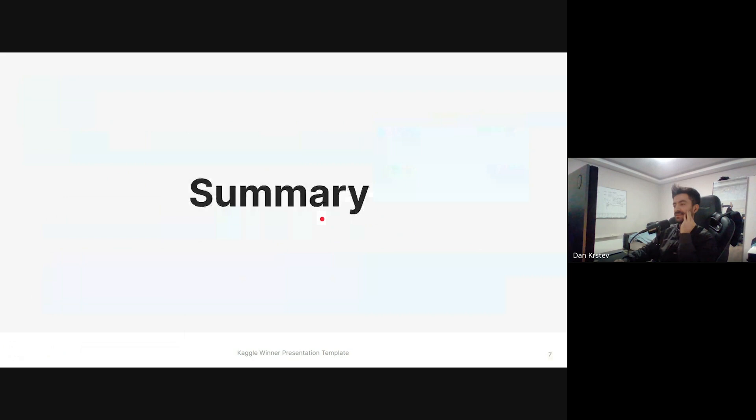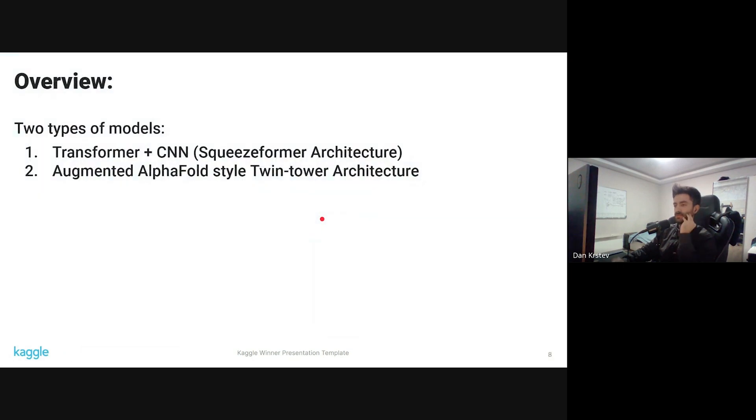This is just a quick summary. I used two types of models in this competition. I used the Squeezeformer architecture, which is just a transformer plus CNN, and I also used an augmented AlphaFold style twin tower architecture. I mainly used two models because I was not sure if I'd be able to make a reasonable model with the AlphaFold style in the allotted time, so the Squeezeformer model was kind of a backup, like a safe option.